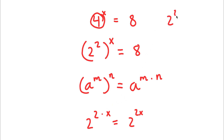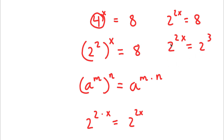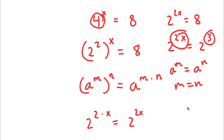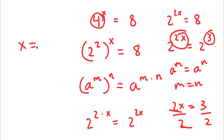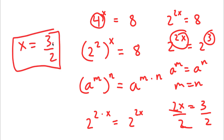Now, 8 I can rewrite as 2 to the power of 3. So I have 2 to the power of 2x is equal to 2 to the power of 3. Since if a to the power of m equals a to the power of n then m equals n, in this case 2x equals 3. Dividing both sides by 2, these cancel out and I'm left with x is equal to 3 over 2. So this is one method of solving this problem.